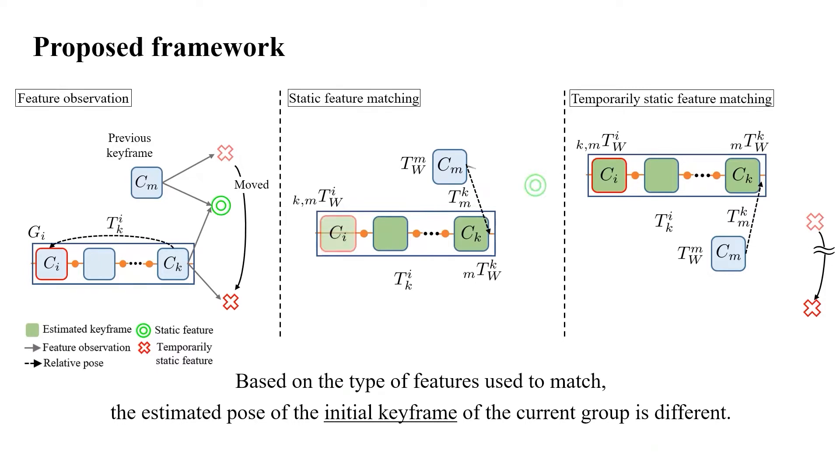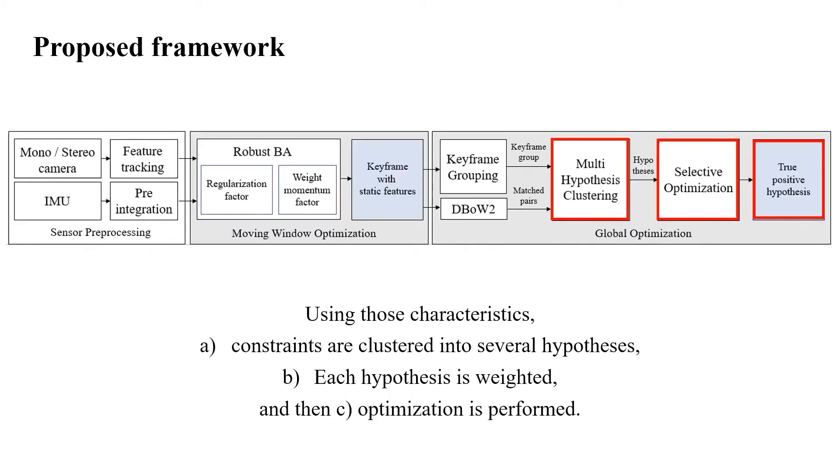In the animation, the estimated pose of the initial keyframe using a static object is shown. Also, the estimated pose of the initial keyframe using a temporarily static object is shown. Using those characteristics, first, constraints are clustered into several hypotheses, then, each hypothesis is weighted so that the true positive hypothesis from the static object is weighted higher.